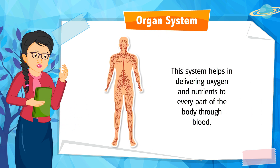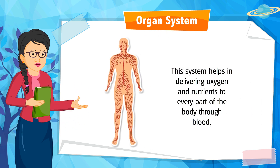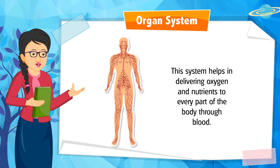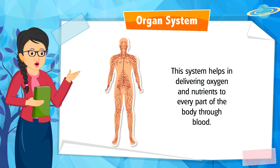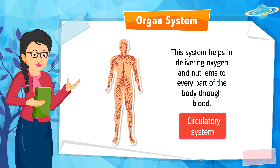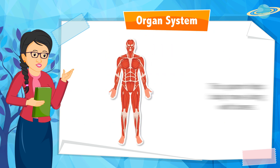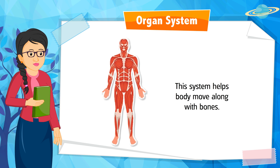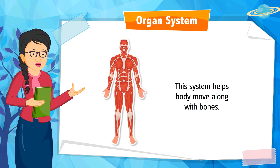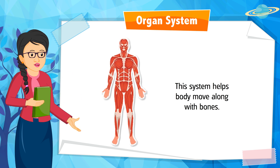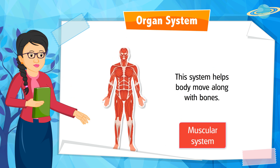This system helps in delivering oxygen and nutrients to every part of the body through blood. Can you identify it? It is the circulatory system. This system helps the body move along with bones. Can you identify it? It is the muscular system.